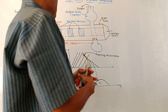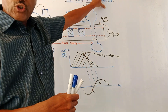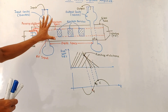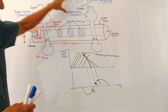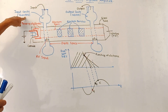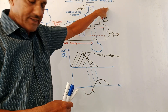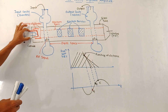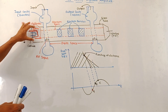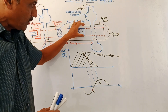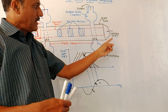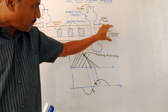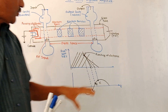Now let us discuss the construction and working of the two-cavity Klystron amplifier. This is the constructional diagram of the two-cavity Klystron amplifier. It has two cavities: the input cavity, which is called the buncher cavity, and the output cavity, which is called the catcher cavity. The cathode emits the electron beam. Focusing electrodes are used to focus the electron beam towards the collector terminal. More positive voltage is applied at the collector terminal, so it produces acceleration of the electron beam.